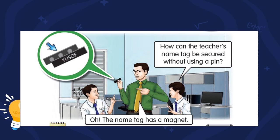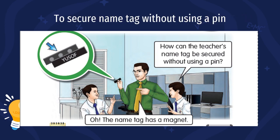This is a conversation between a teacher and his pupils. One of his pupils asked, 'How can the teacher's name tag be secured without using a pin?' His teacher replied, 'Oh, the name tag has a magnet.' So the next use of a magnet is to secure a name tag without using a pin.